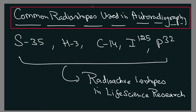Some of the common radioisotopes used in autoradiography are sulfur-35, tritium, carbon-14, iodine-125, and phosphorus-32. About these radioisotopes, we are going to have a more detailed discussion in the lecture on radioactive isotopes in life science research.